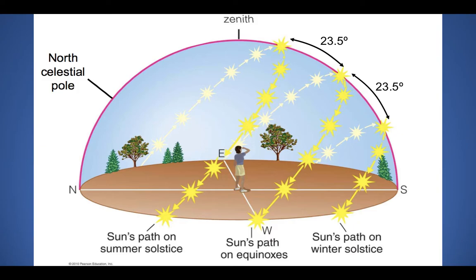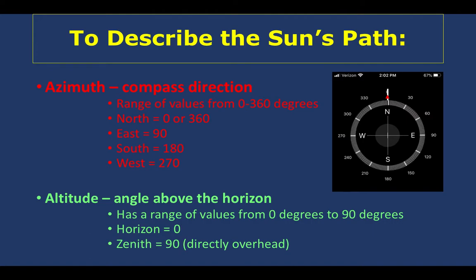Because the sun's path changes, you'd like to make sure your solar panels are oriented in a way that maximizes sun exposure and the amount of electricity generated. To describe the sun's path, there are really two things you'll need to know. One is the azimuth, which is just a fancy name for compass direction. That compass direction has a range of values from zero going all the way around in a circle back to 360, where zero degrees represents north, 90 degrees is east, 180 is south, and 270 degrees is west.